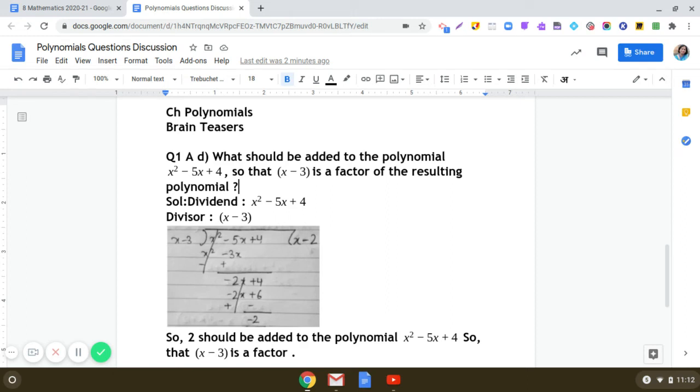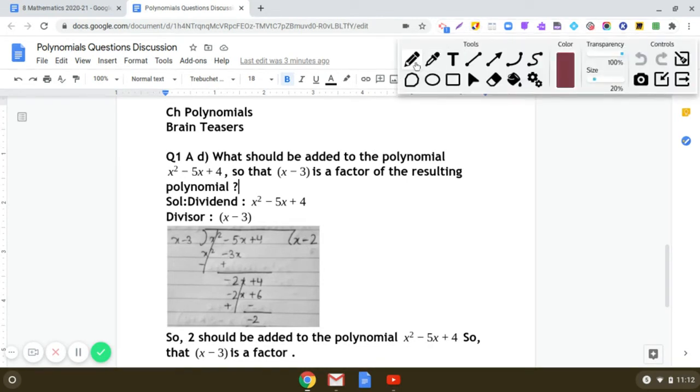The question given to us is: what should be added to the polynomial x² - 5x + 4 so that (x - 3) is a factor of the resulting polynomial? So you see that here the dividend is x² - 5x + 4.